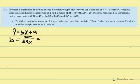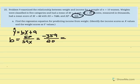SP is equal to negative 359 over SSX, which was given equal to 20. So our slope equals negative 359 divided by 20. We get a slope equal to negative 17.95.